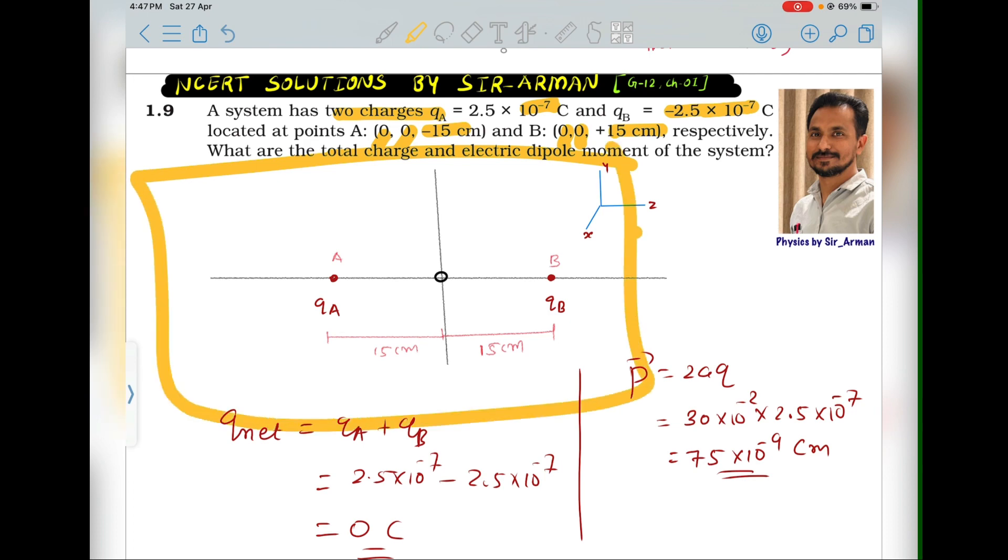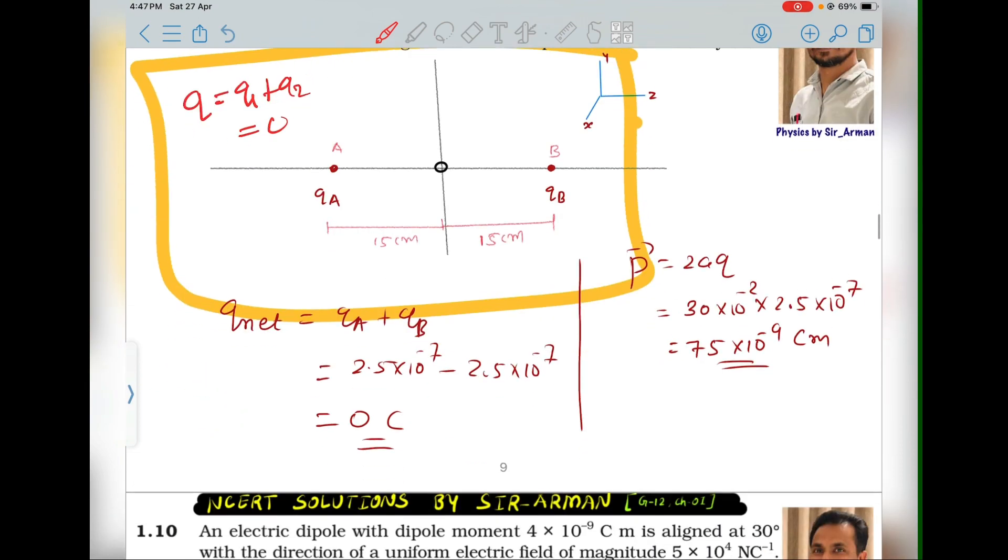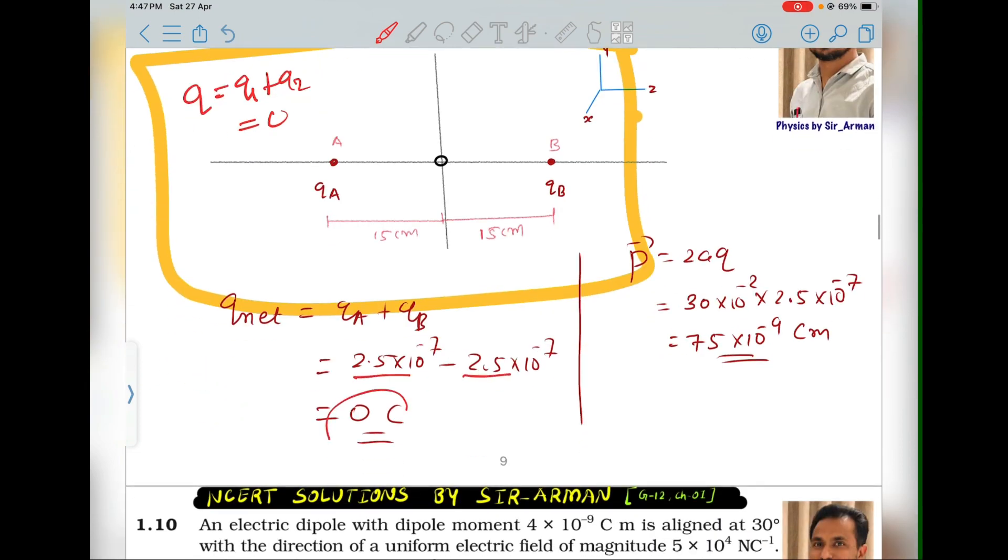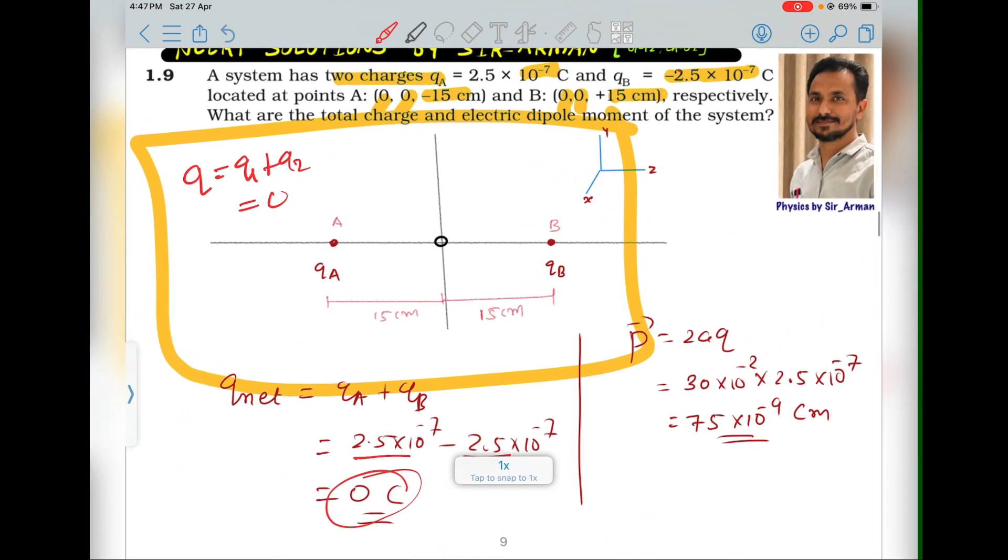If this is our whole system, then the total charge of the system is Q = Q1 + Q2. Here we have one negative charge and one positive charge. If we add them, the summation will be 0. QA plus QB, the summation is 0, so the net charge of the system is 0.